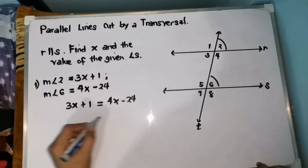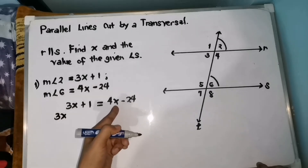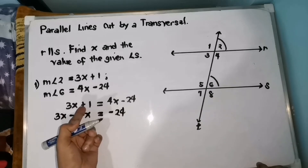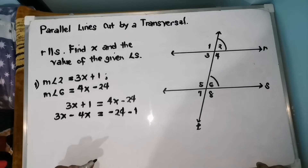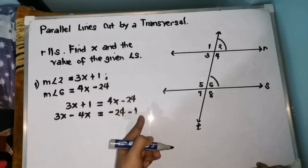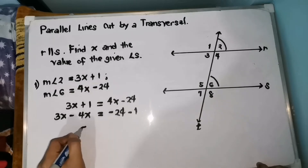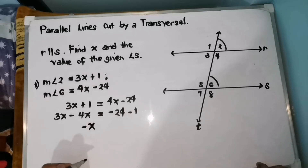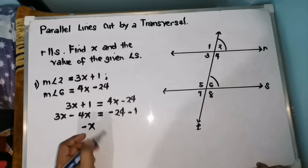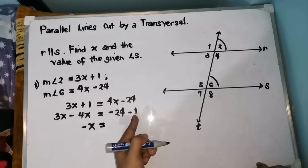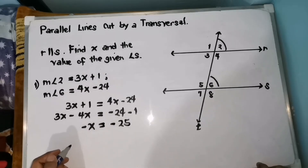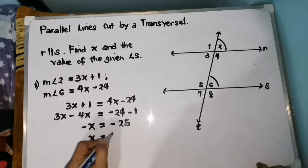Then combine like terms. We have 3X and 4X — moving 4X to the other side gives negative 4X, equals negative 24. Then positive 1 becomes negative 1 on the other side. So 3X minus 4X is negative X. Negative 24 minus 1 — like sign, add, then copy the sign — so we have negative 25. Then multiply both sides by negative 1, so X equals positive 25.